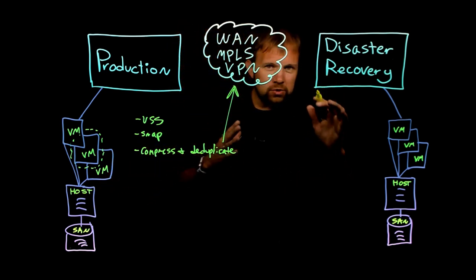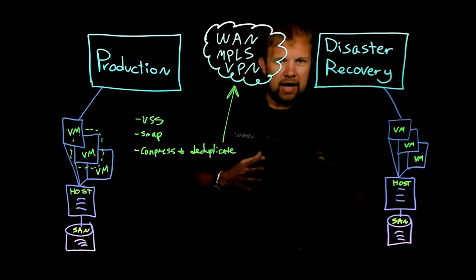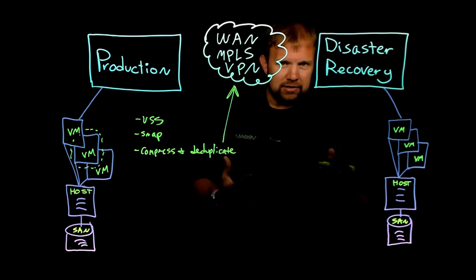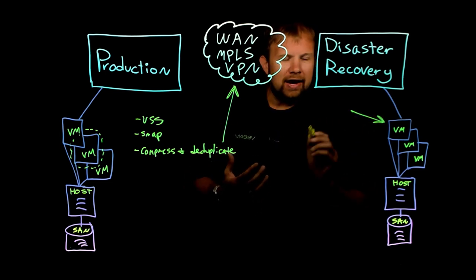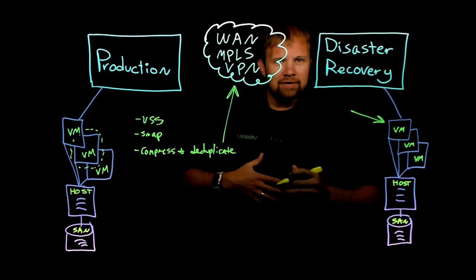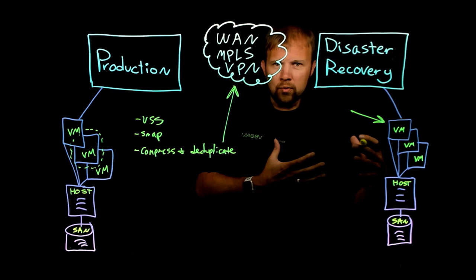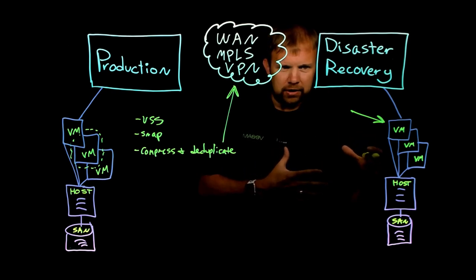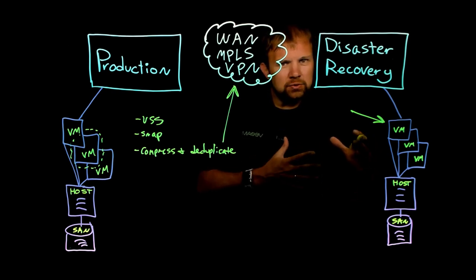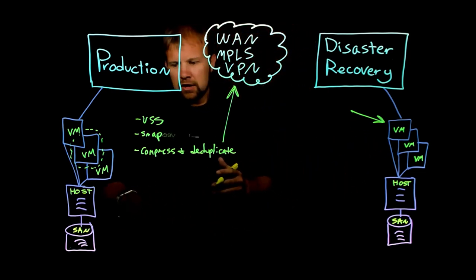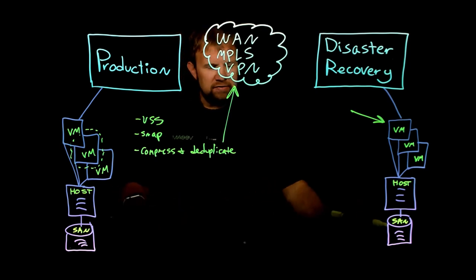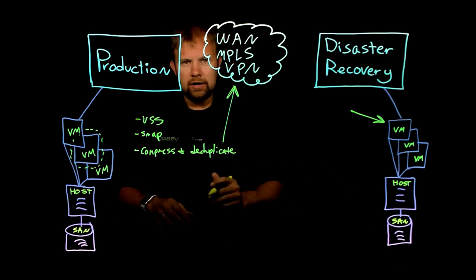However, once you get to the DR site, we decompress it and rehydrate it and write it as a native, fully hydrated virtual machine ready to go at a moment's notice, already registered in inventory. That's one of the key differentiators, and you may notice we've got the storage arrays drawn at the very bottom as part of a SAN network.